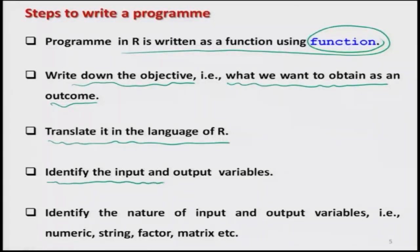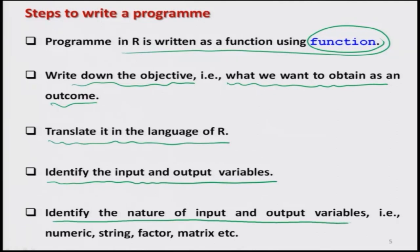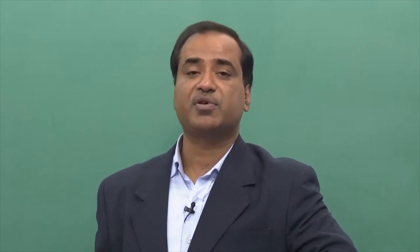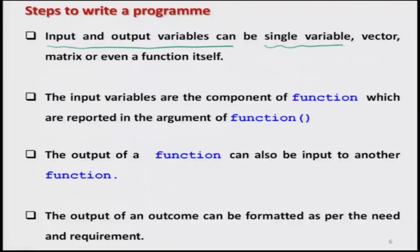To write a program, the first step is to identify the input and output variables — input variables are given, and the outcome is obtained. We also have to identify the nature of those variables: they can be numeric, string, factor, matrix, or a combination. Input variables can be a single variable, vector-valued, matrix-valued, or even a function. Some inputs can be matrix, some string, some character — it depends on the objective.